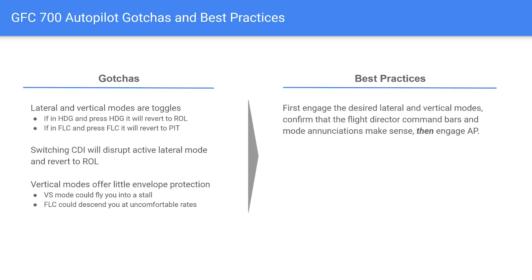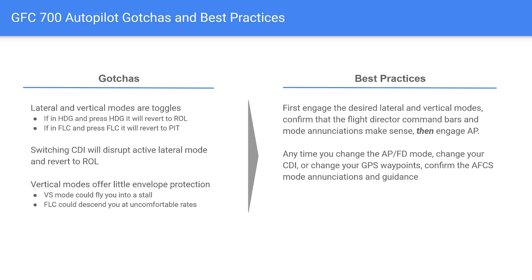Best practices: engage the lateral and vertical modes you want, confirm the flight director command bars are commanding something that makes sense, check the mode enunciations, then engage the autopilot. Think of it as: turn on the brain, make sure the brain makes sense, then engage the muscle. Any time you change autopilot modes, change the CDI, or change the GPS flight plan, confirm the mode enunciations are what you expect. It's also best practice to climb in flight level change and descend in vertical speed.